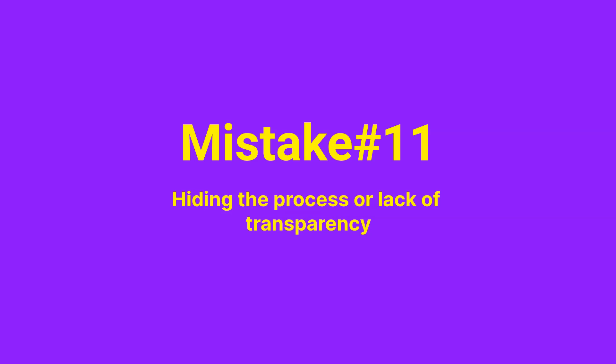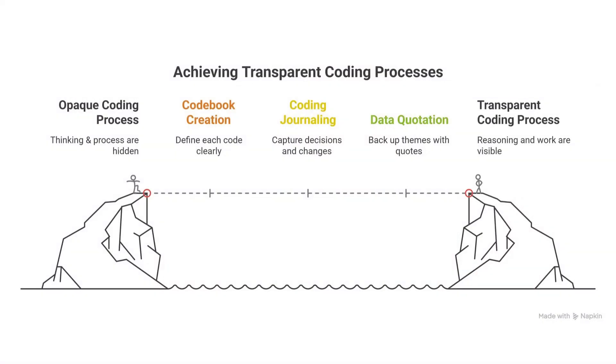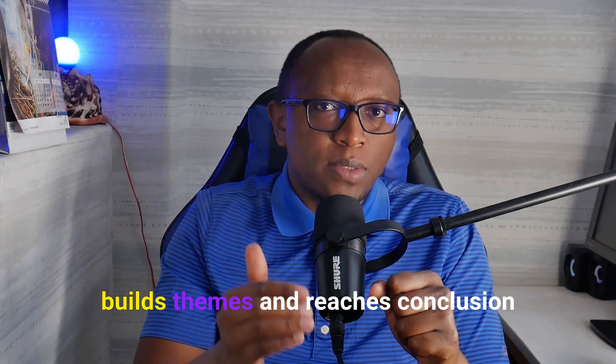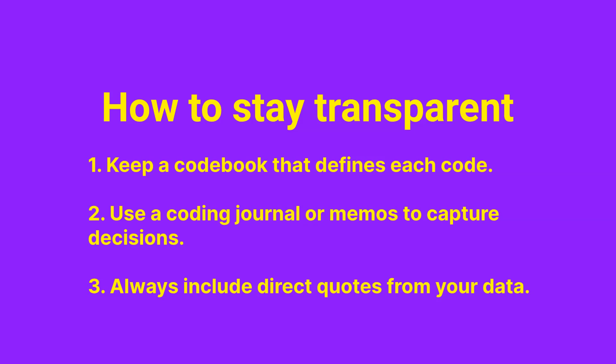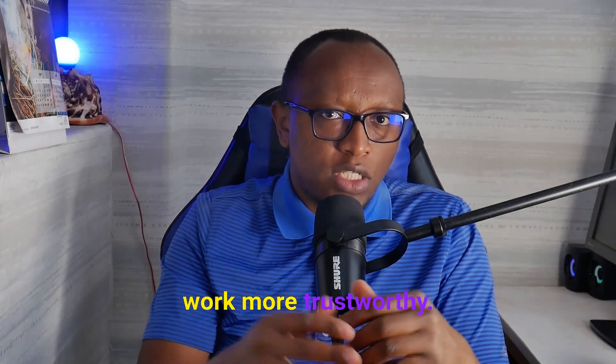Mistake number eleven: hiding the process or lack of transparency. If someone looked at your analysis, could they actually follow your thinking? A major mistake is not being transparent in your coding process — assigning codes, building themes, and reaching conclusions without showing how you got there. To stay transparent: keep a codebook that defines each code clearly, use a coding journal or memos to capture decisions and changes along the way, and always include direct quotes from your data to back up your themes. Don't just do the analysis — show your reasoning. This is what makes your work trustworthy.